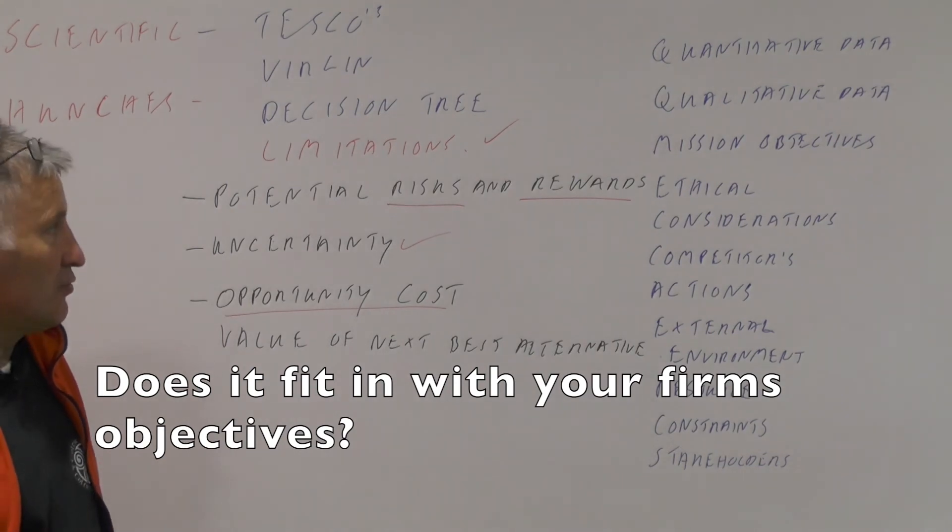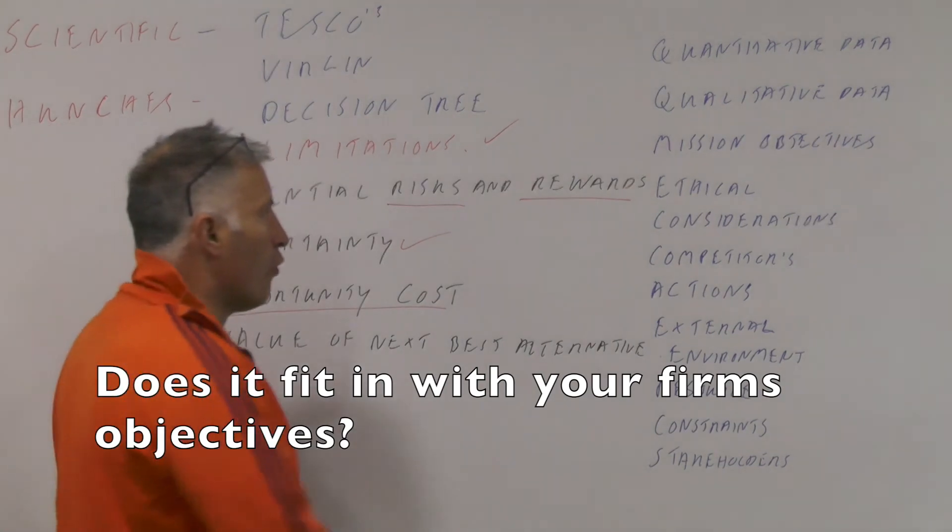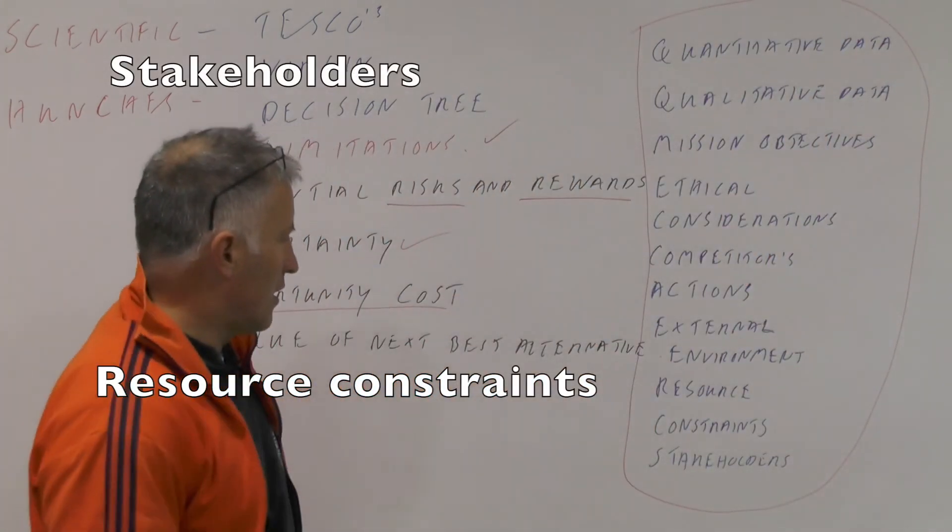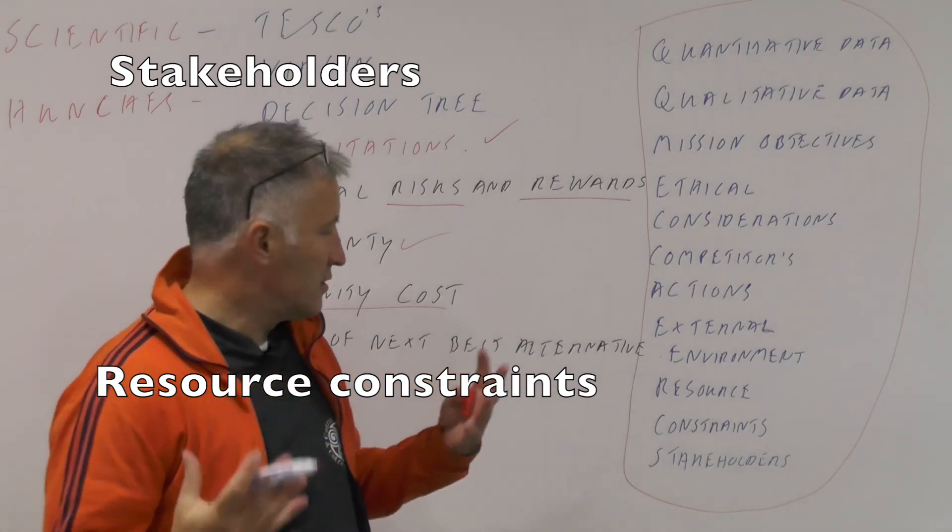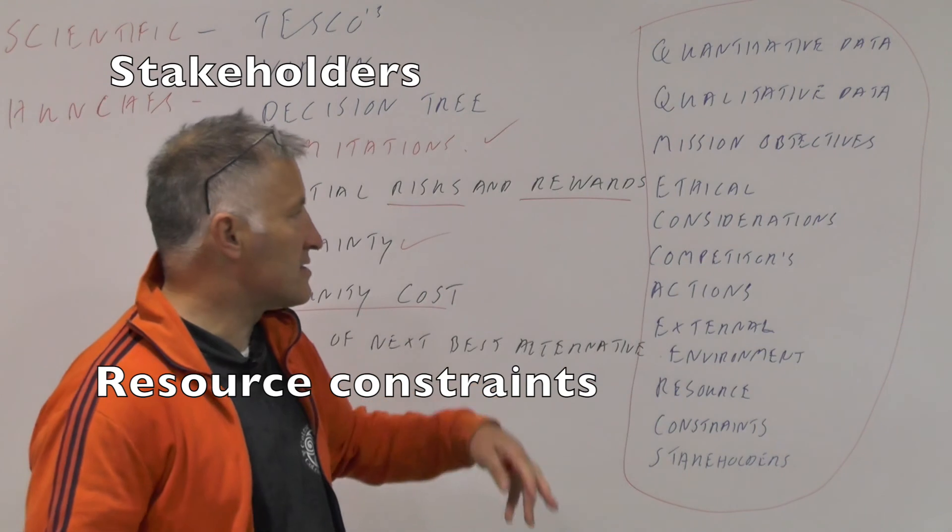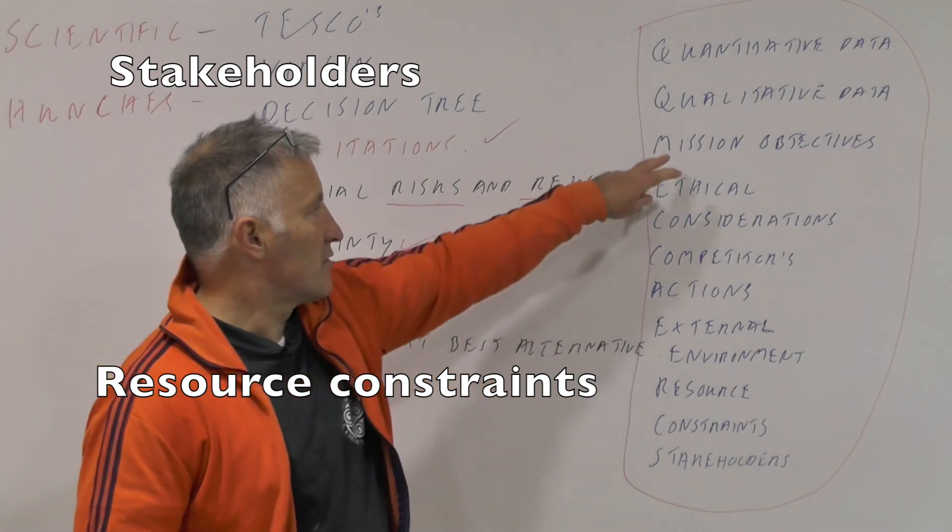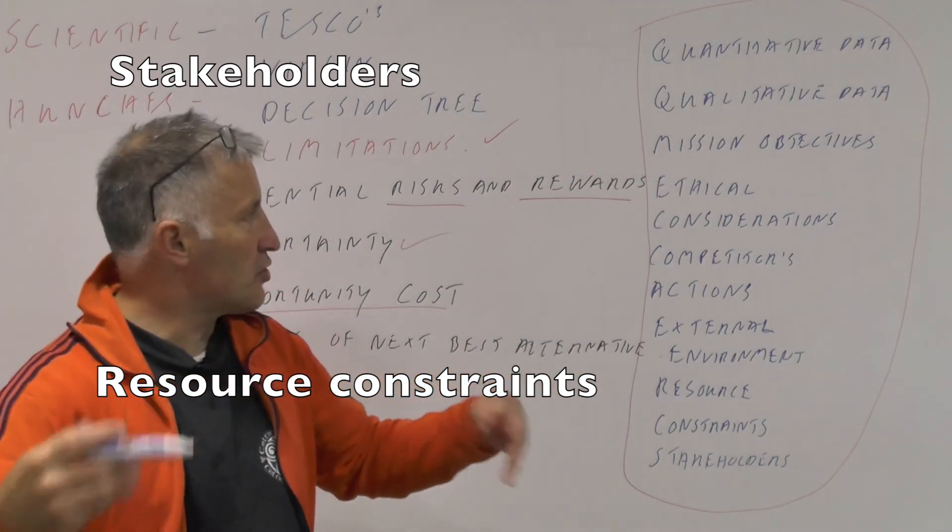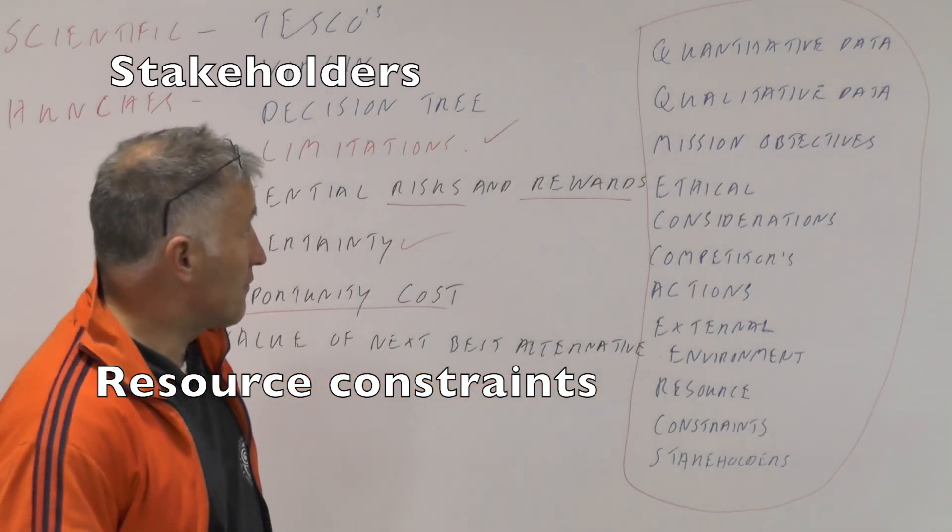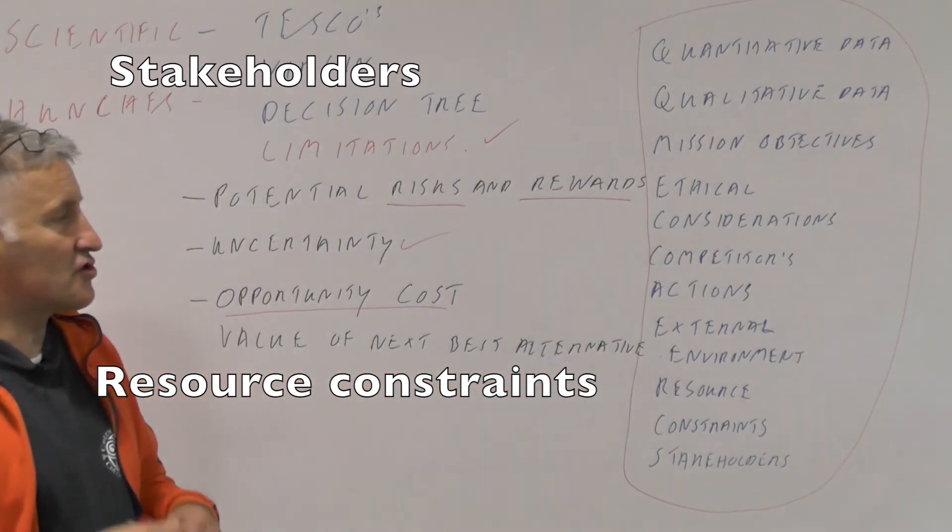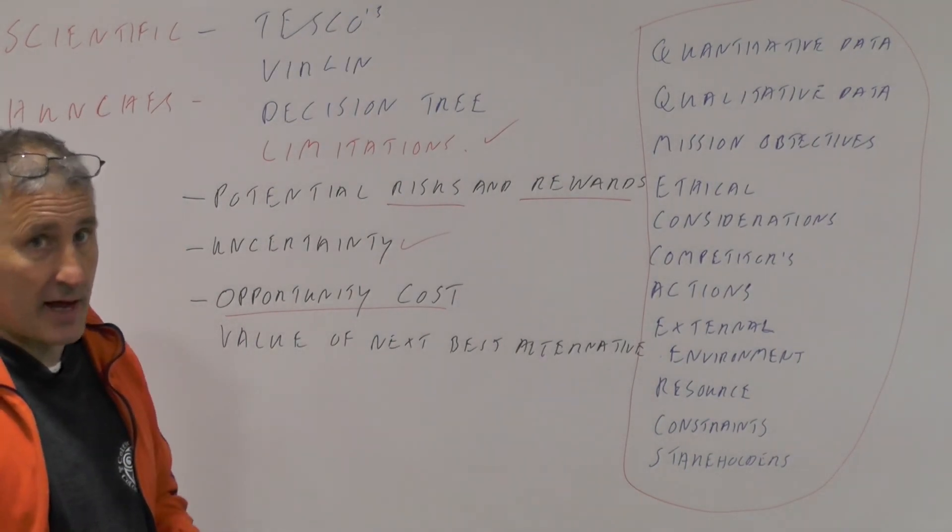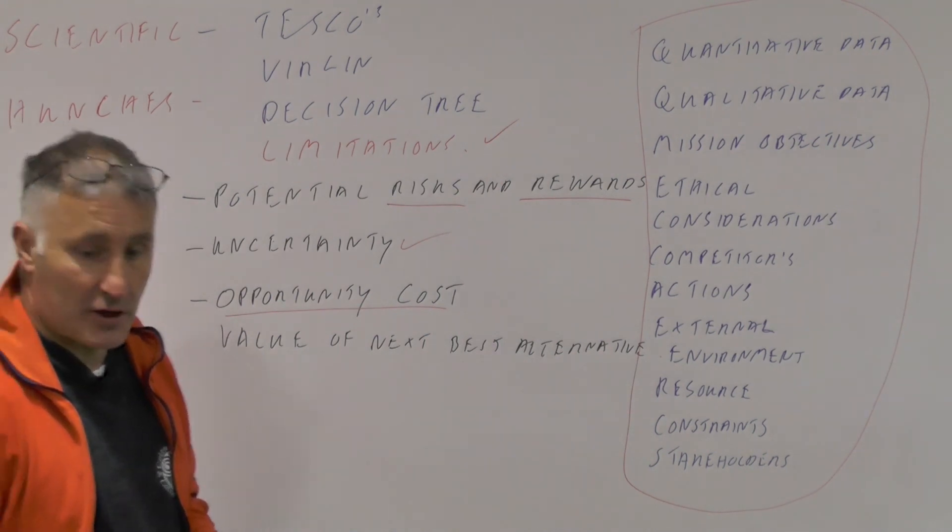Whenever you make any decision, there are a whole load of factors that need to be taken into account: Have you got enough resources? The stakeholders? What's happening in the external environment? What are the competitors up to? The ethical considerations? The mission - what is your mission, what is the whole purpose of the firm? The quantitative data and also the qualitative data. So a decision tree is just one technique that we use to help us when we formulate a plan for the future.